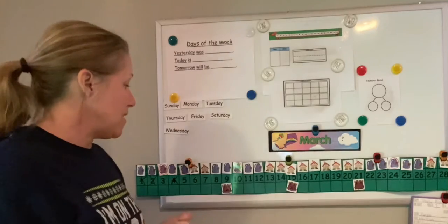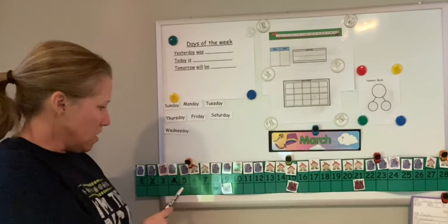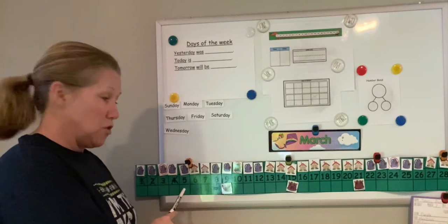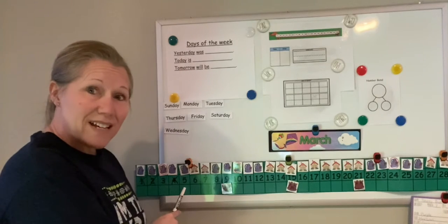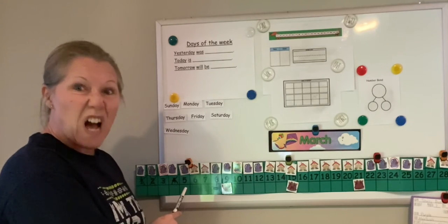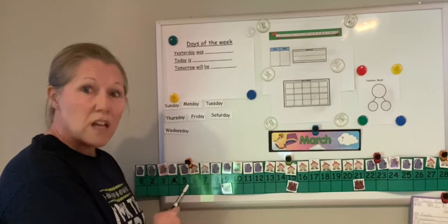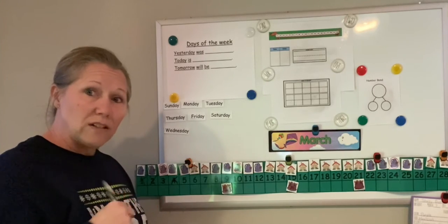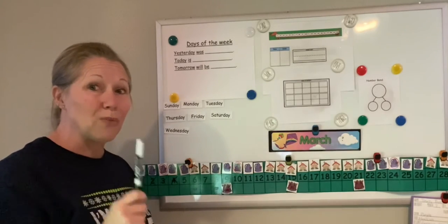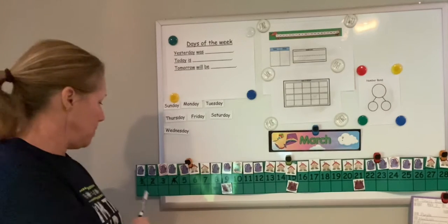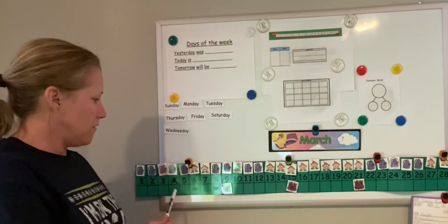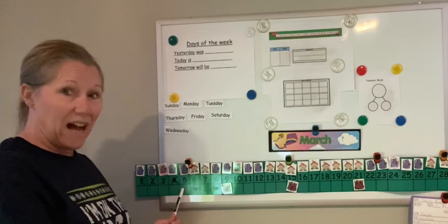And then remember friends, we are counting to this number right here. Do you know what number that is? That's right, it's five. So I'm gonna point on my calendar, you're gonna point on yours, and we're gonna count to five. Here we go. One, two, three, four, five.